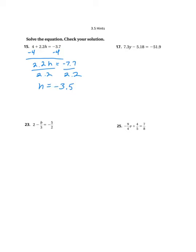Then I can go ahead and check my solution by putting negative 3.5 back into my equation. And I don't know that I can do 2.2 times 3.5 in my head, so I'm going to go ahead and write this out.